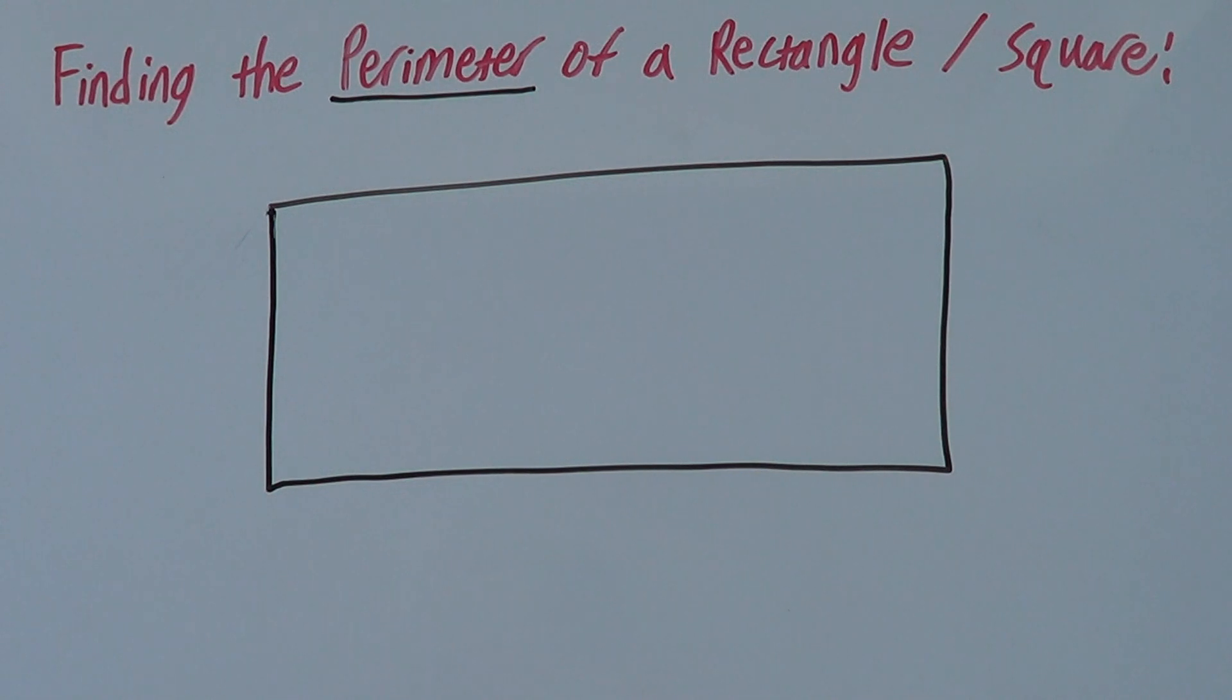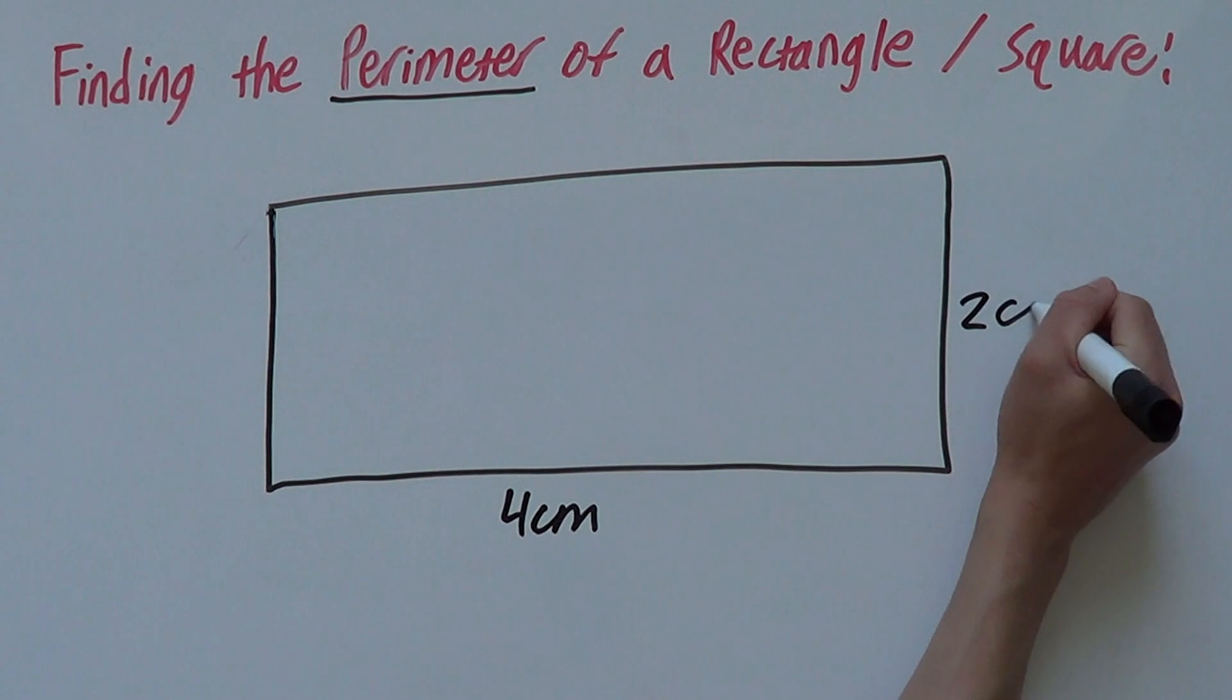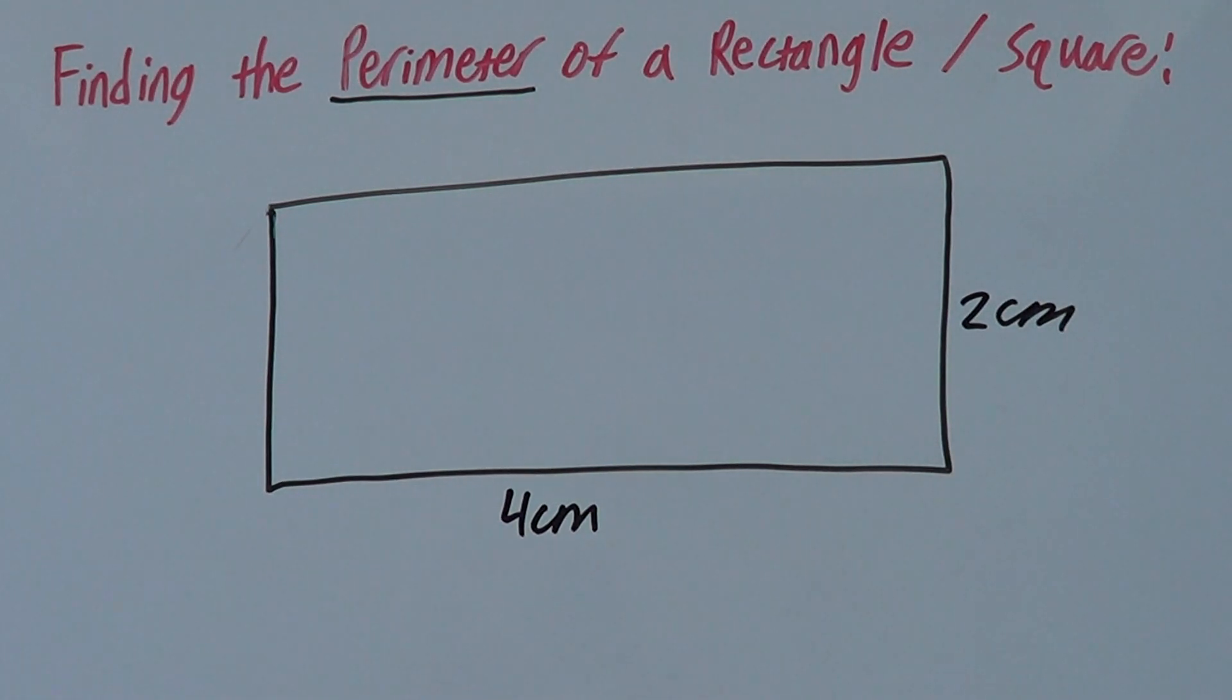Now, let's say this shape has a length of 4 centimeters and a width of 2 centimeters. The way we find the perimeter is by adding up all the sides of a rectangle or a square or any shape.